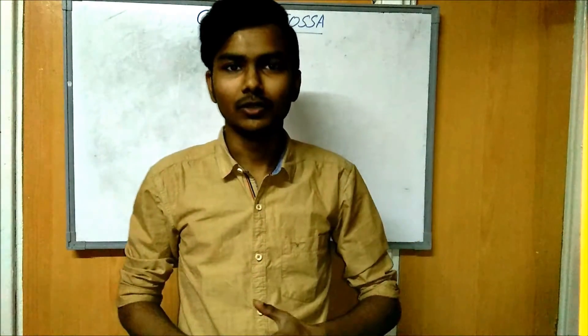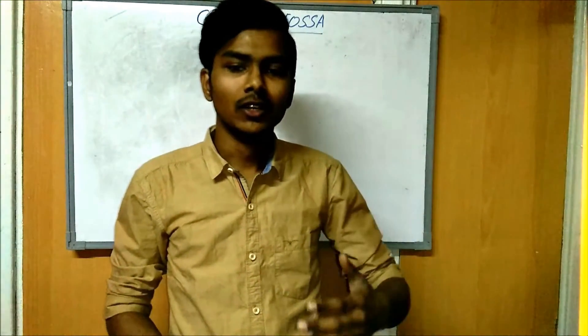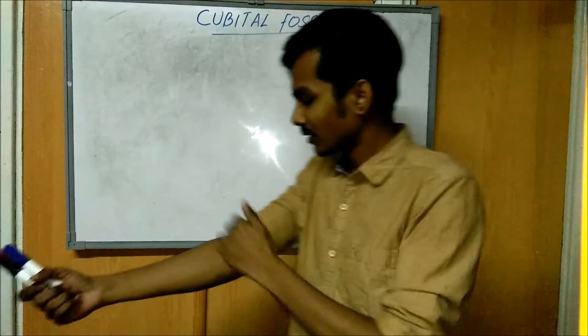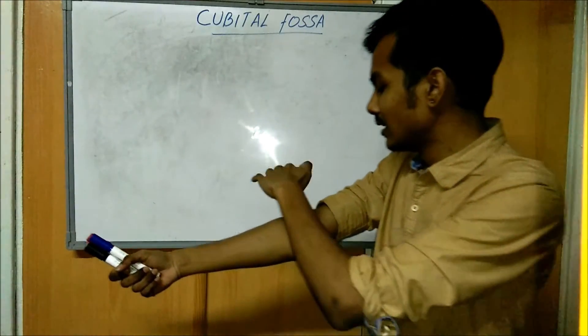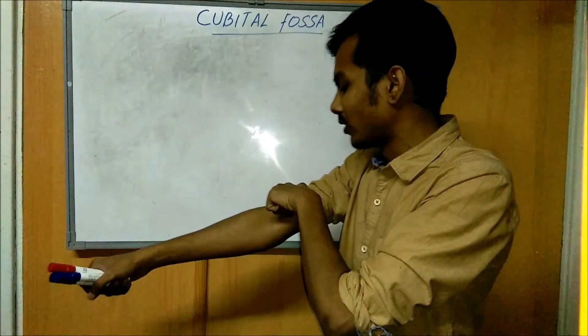In the upper limb, the most important question is cubital fossa; in the lower limb, popliteal fossa. The cubital fossa is located exactly here — this is the lateral epicondyle.